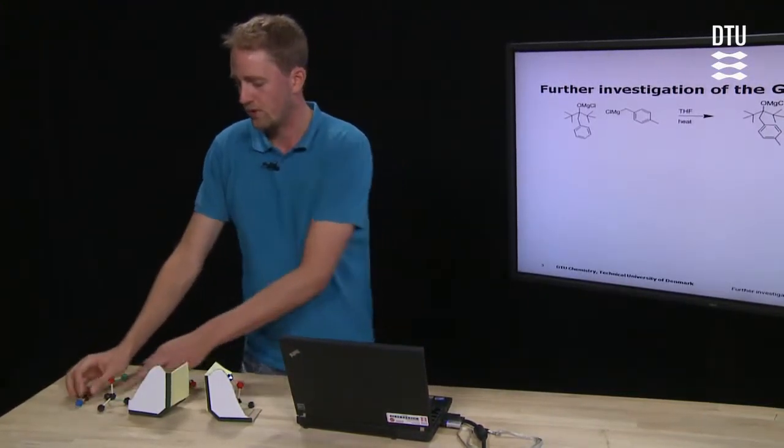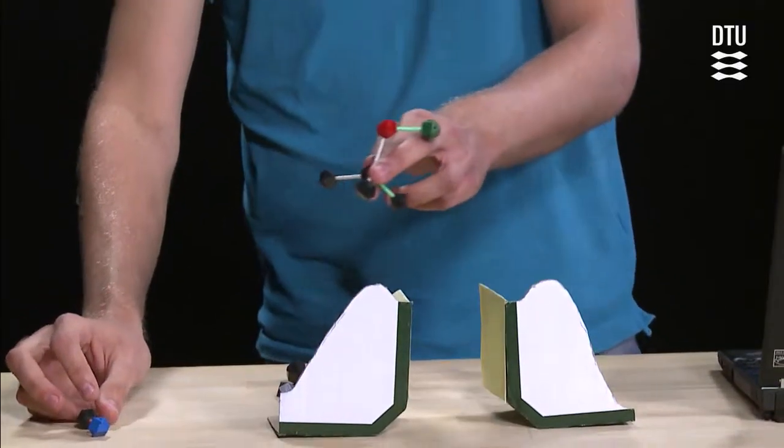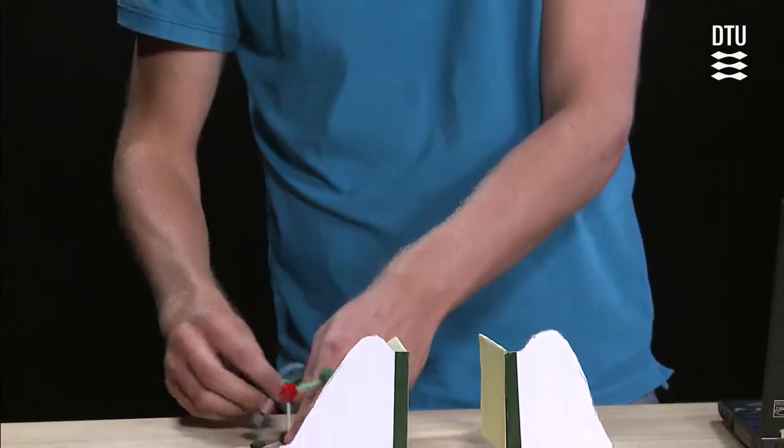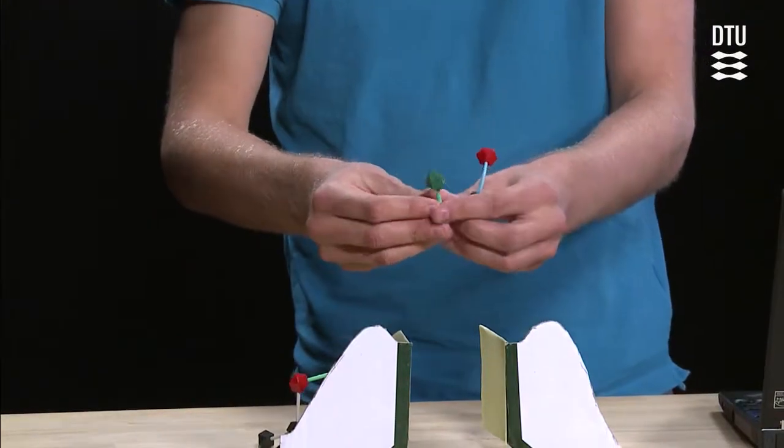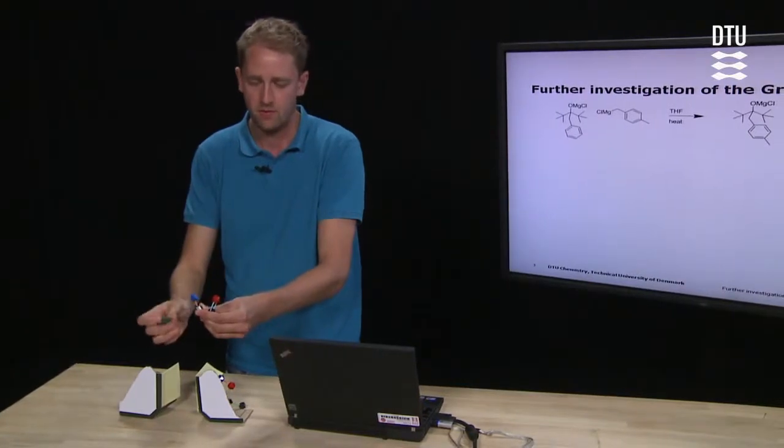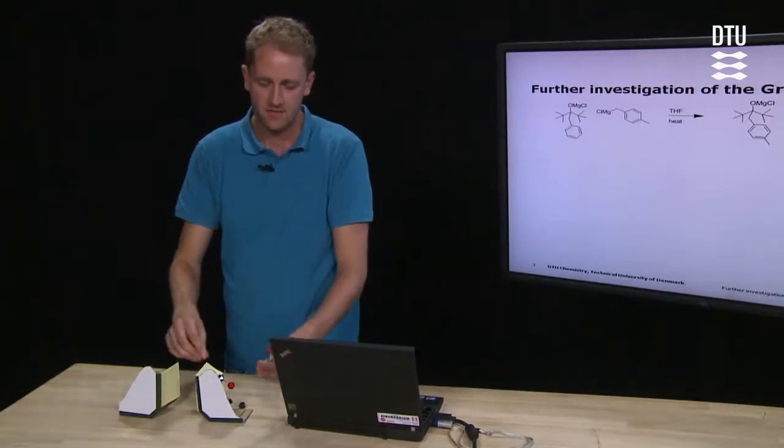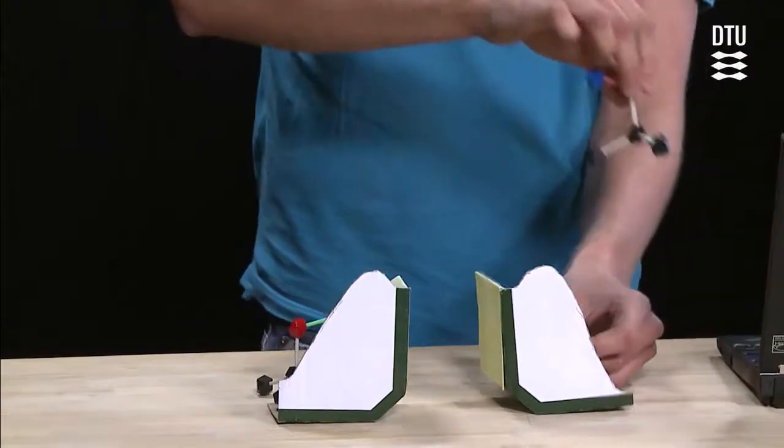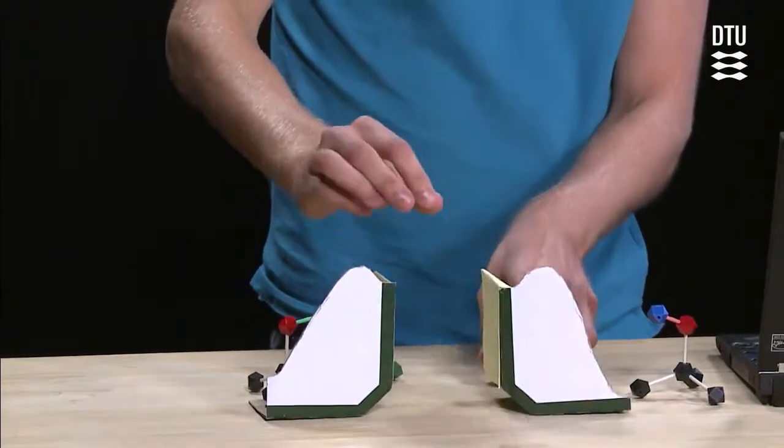But when you heat this, this will be higher in energy while you make these standard compounds again, and then this new Grignard reagent will be able to react with this ketone, thereby creating a new compound.